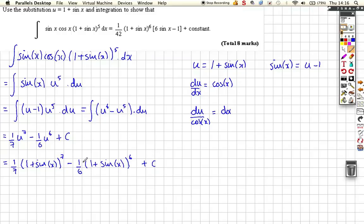And then we can turn these fractions out of 42. So let's turn these out of 42. So this is 6 42th, or 6 out of 42, 1 plus sine x to the power of 7, minus 7 out of 42, 1 plus sine x to the power of 6, plus our constant of integration.